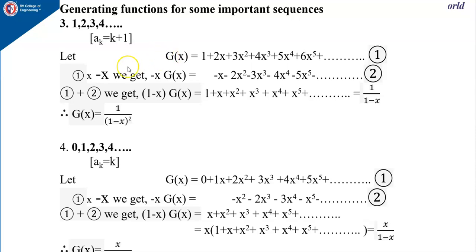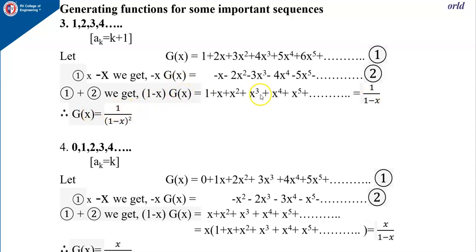Multiply g(x) by minus x. We get minus x · g(x) equals minus x minus 2x² and so on. Adding equations 1 and 2, we get (1 minus x)·g(x) equals 1 plus x plus x² plus x³ and so on, which equals 1/(1 minus x). Therefore, g(x) equals 1 divided by (1 minus x)², since the (1 minus x) denominator moves to the right-hand side.